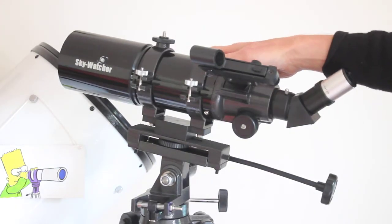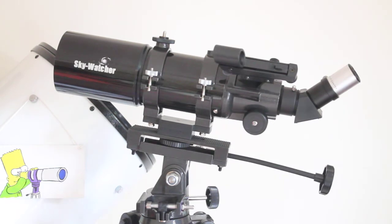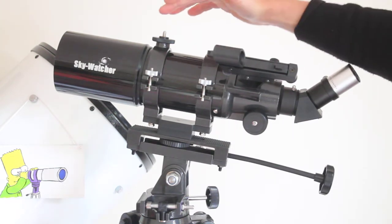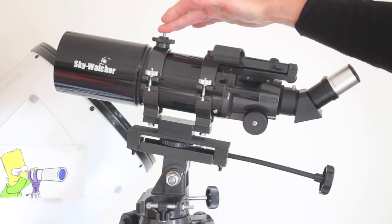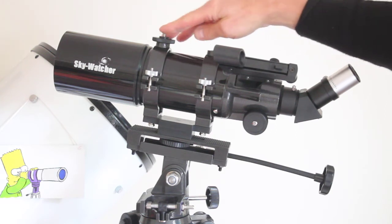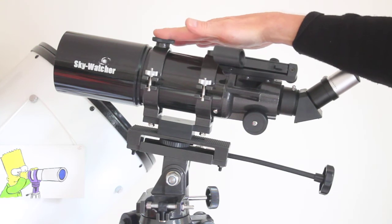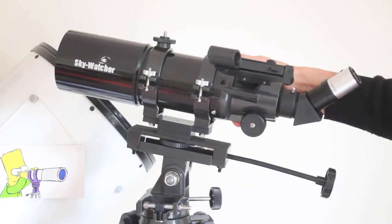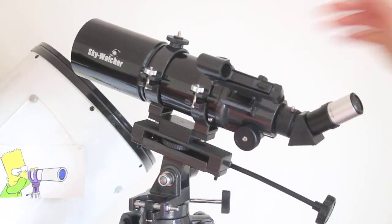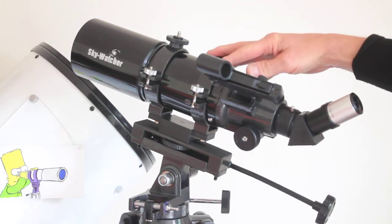It also has a camera thread on the top, so if you want to mount a camera piggyback you can do that. I find a number of people also find this OTA very good to be used as a guide scope. Often people will contact me and ask if I can just supply the OTA optical tube assembly on its own.